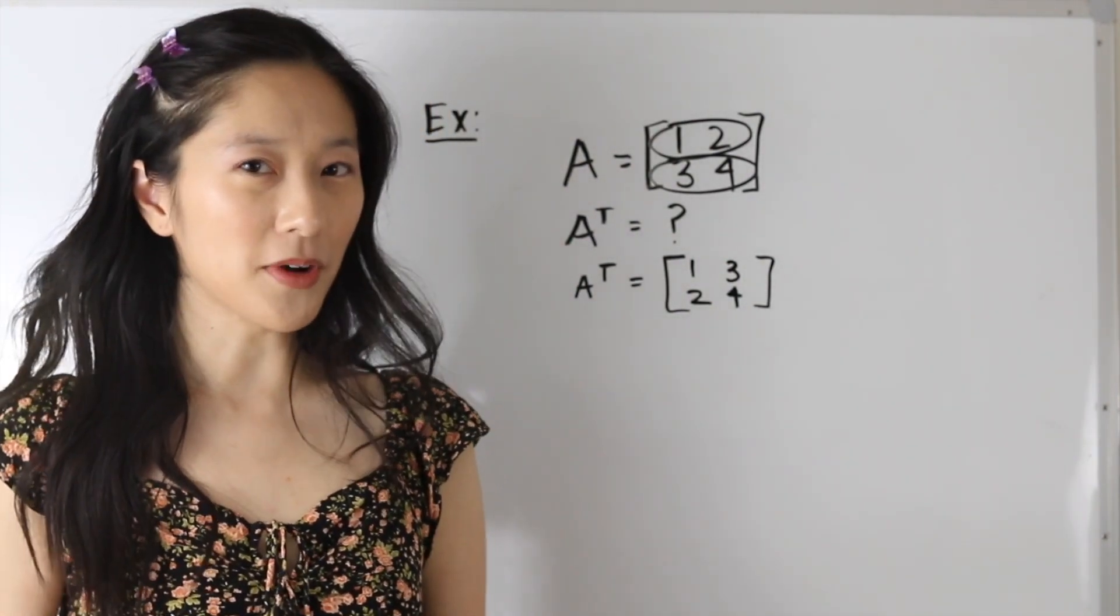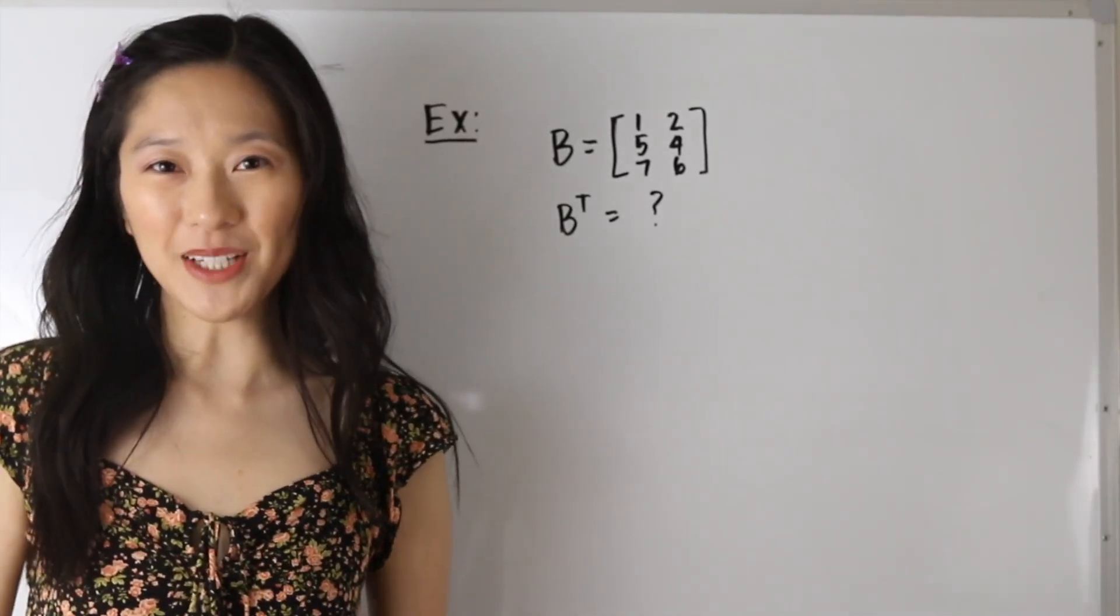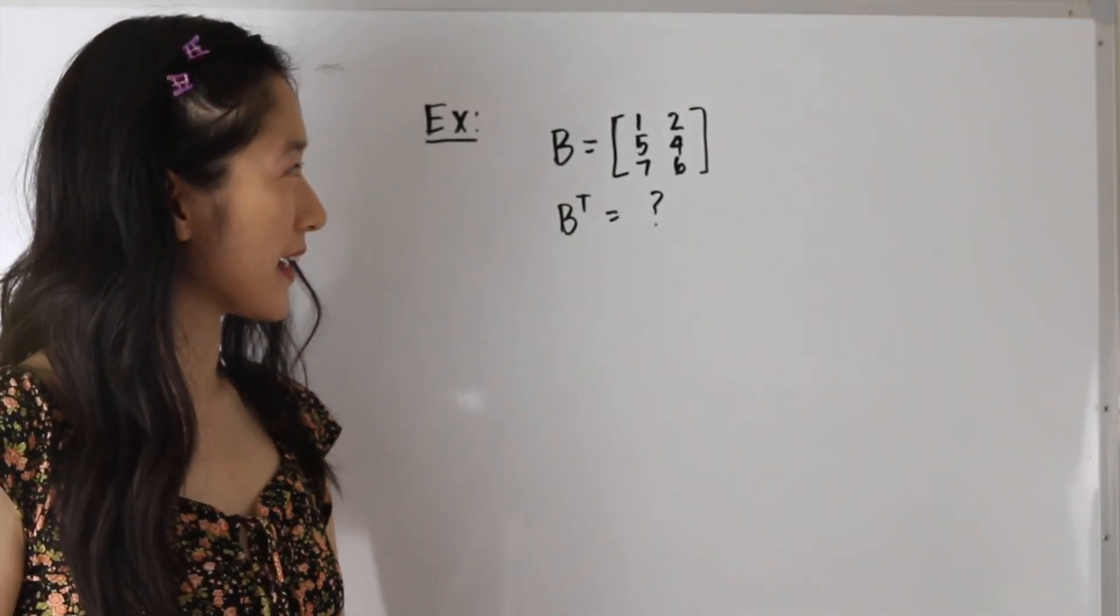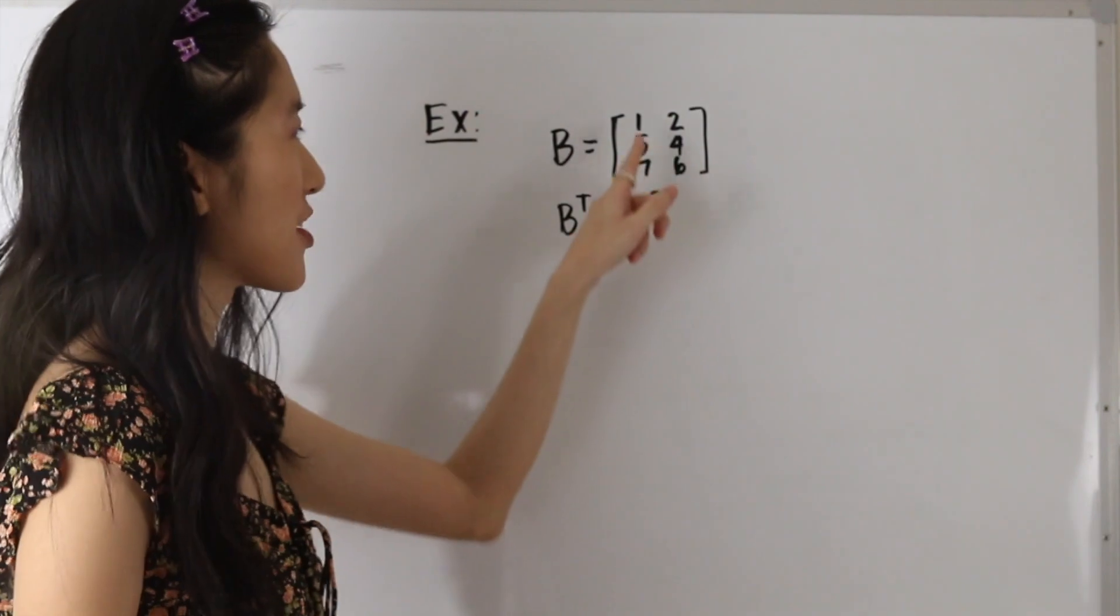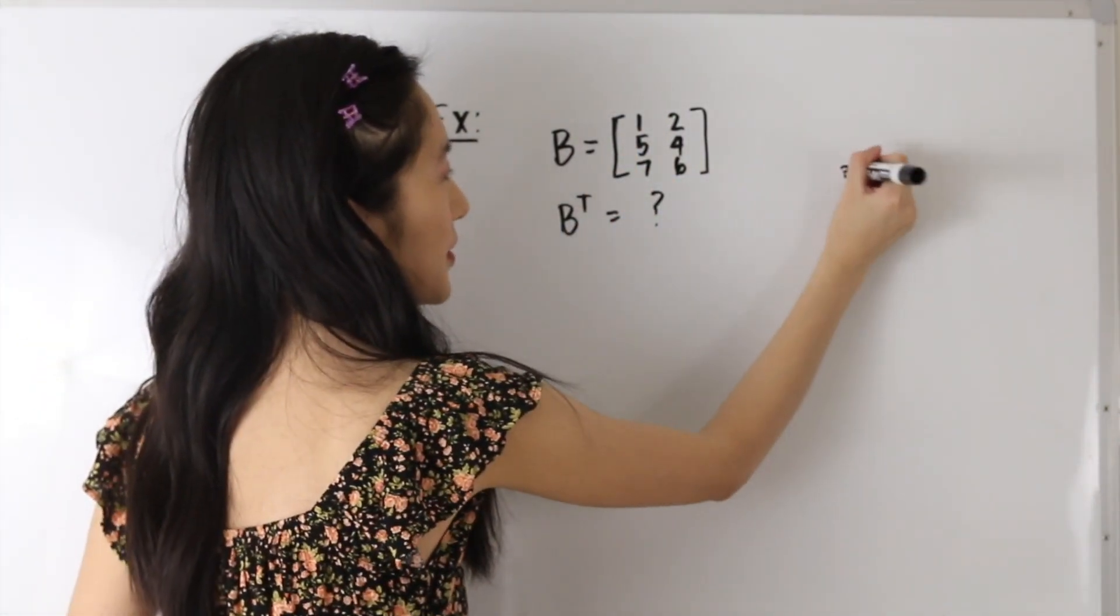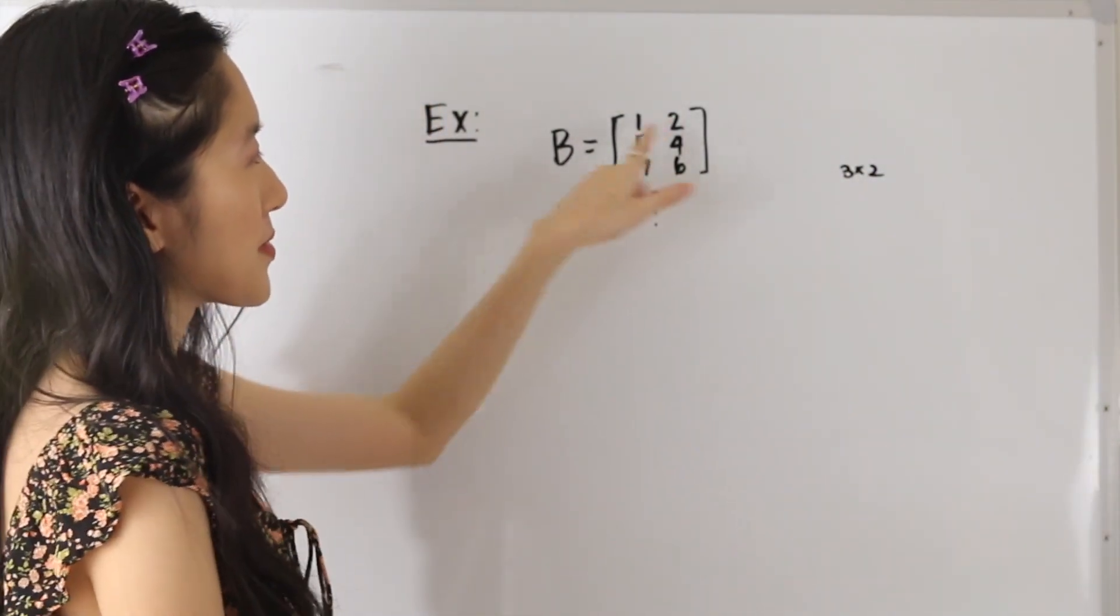So let's take a look at one more example. Here we have matrix B, and matrix B has dimensions 3 by 2.